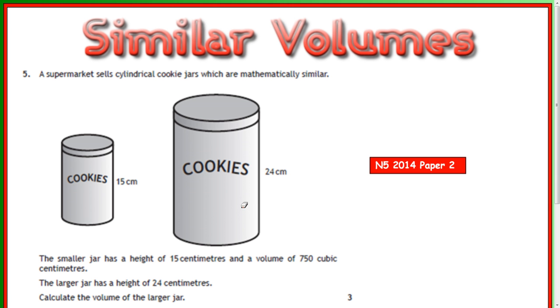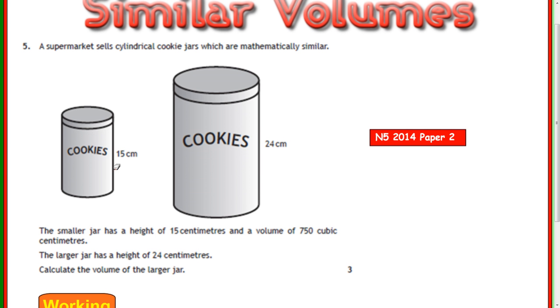Lastly, as before, we'll look at an exam paper. This was National 5, 2014, paper 2. So it's a calculator paper. The supermarket sells cylindrical cookie jars, which are mathematically similar. It tells you the small jar's height and the large jar's height, and it also tells you the volume of the smaller jar, which is 750.